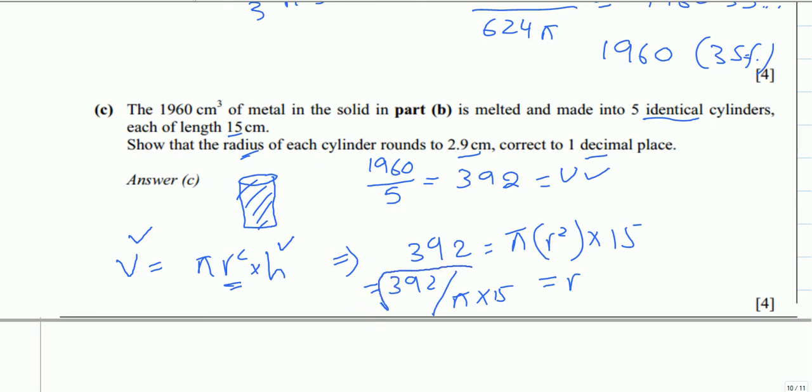Finally, r = 2.884 and so on, which equals 2.9 to one decimal place. Thanks for watching.